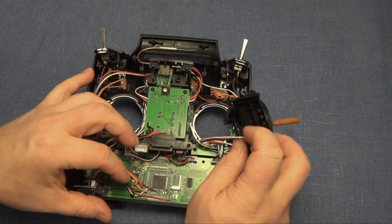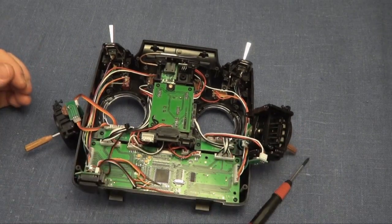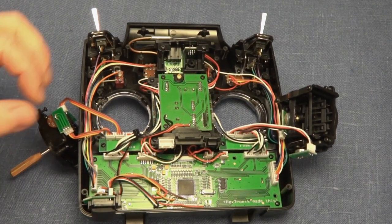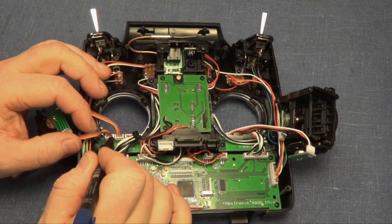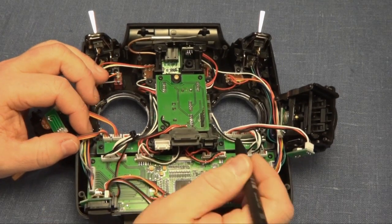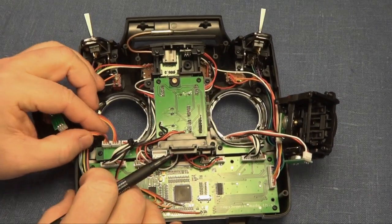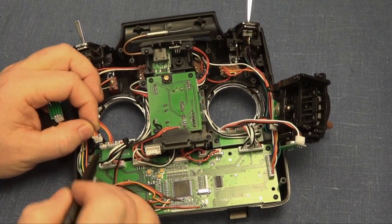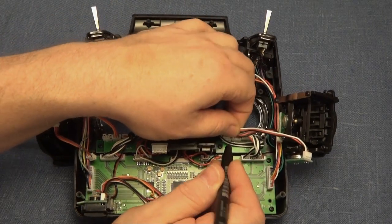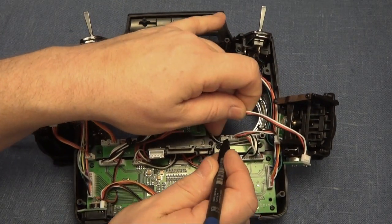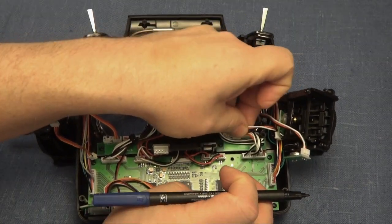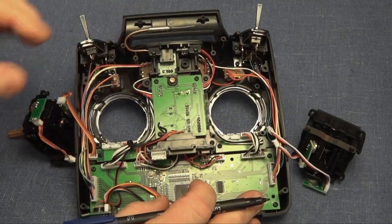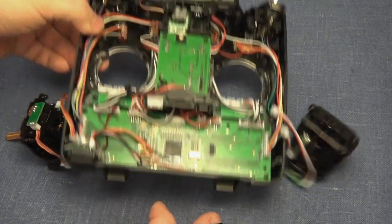So we've got both the gimbals loose here. And due to previous experiences, I'm using a marker to mark which contact goes into which socket. This is a really good idea. Believe me. And there goes the gimbals. And we can put the radio aside. We don't need it for a while.